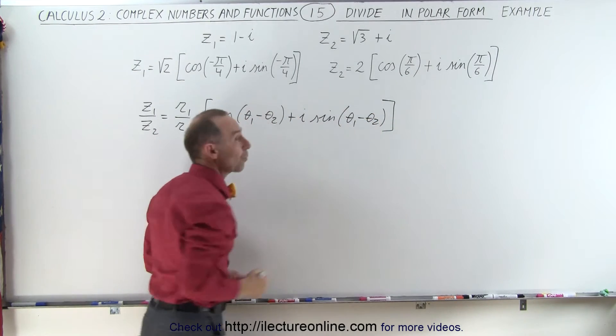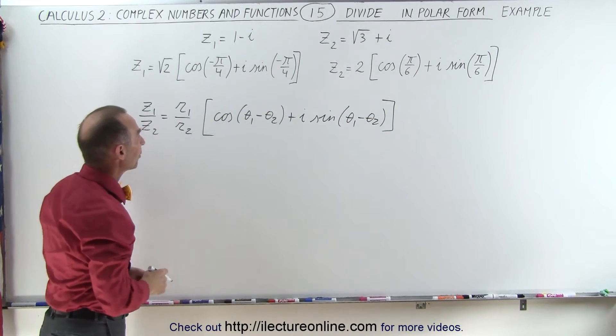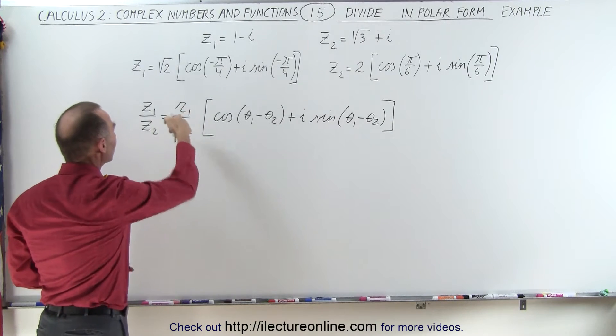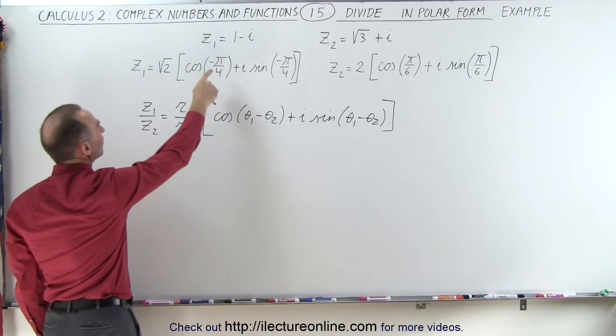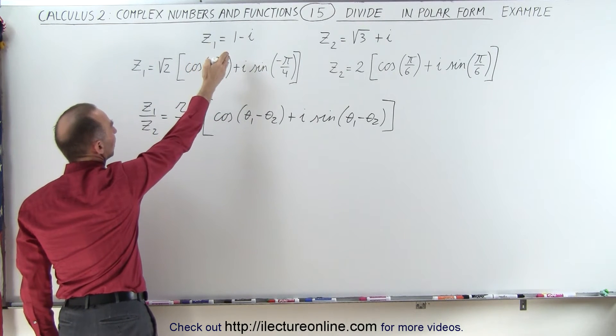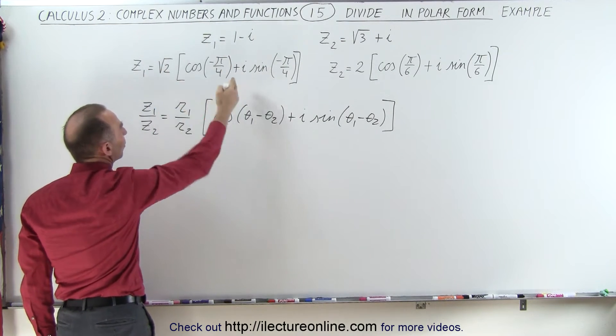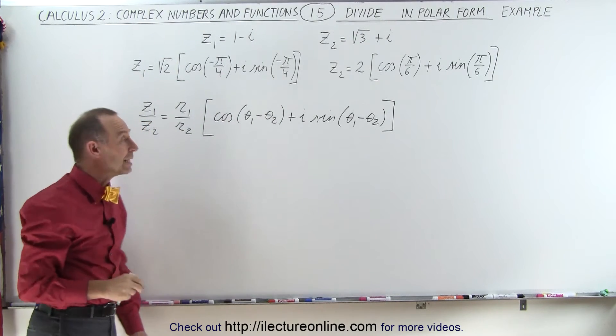In other words, we subtract the argument from the first one and take the quotient of the moduli. Let's go ahead and plug in what we have. We've already converted from the normal A plus Bi format into the polar format like we did in previous videos.